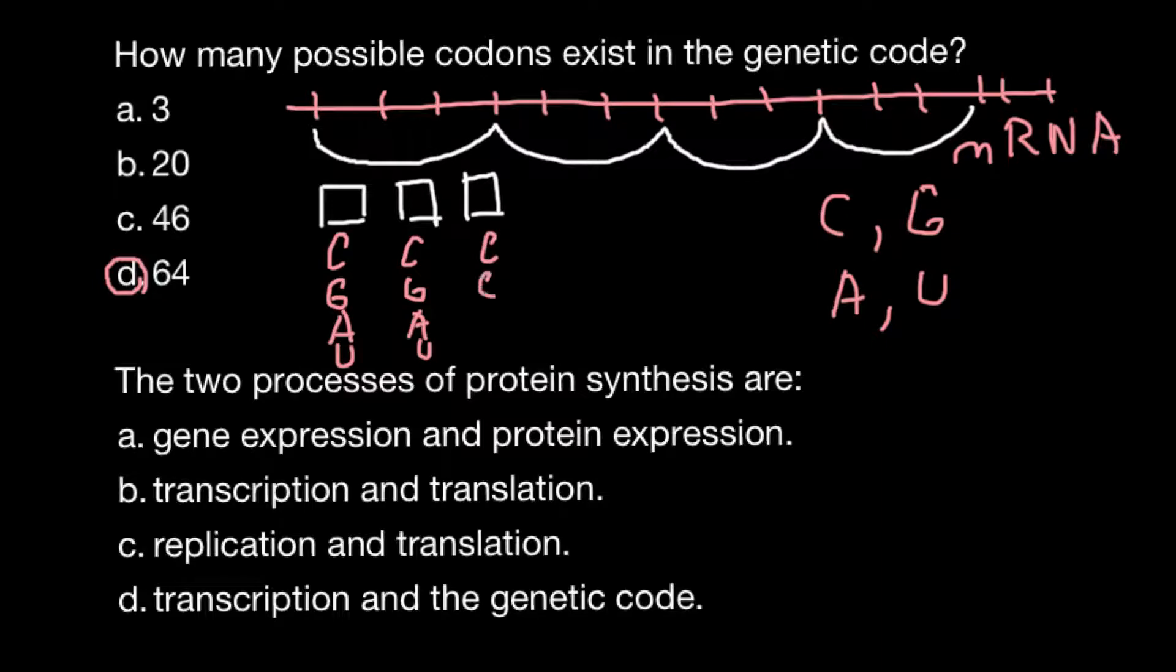And the same is also true for the last position: cytosine, guanine, adenine, and uracil. So four variants for the first position, four variants for the second position, and four variants for the third position. The total number would be 4×4×4, which equals 64 different variants of codons. This is answer D.